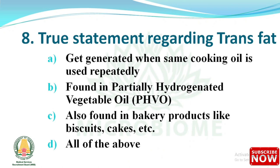Next question: which is a true statement regarding trans fat? Options: (A) generated when the same cooking oil is used repeatedly, (B) found in partially hydrogenated vegetable oil, (C) also found in bakery products like biscuits and cakes, (D) all of the above. The right answer is option D — all three statements are true.